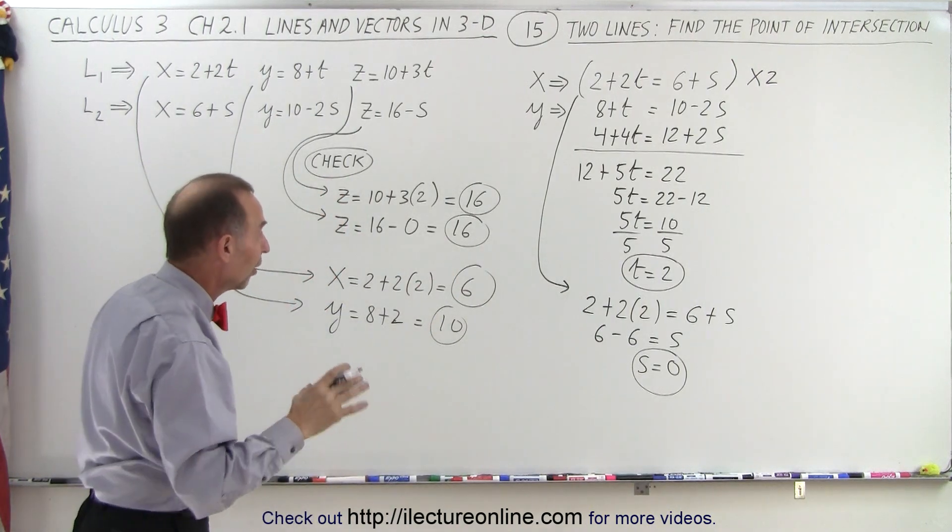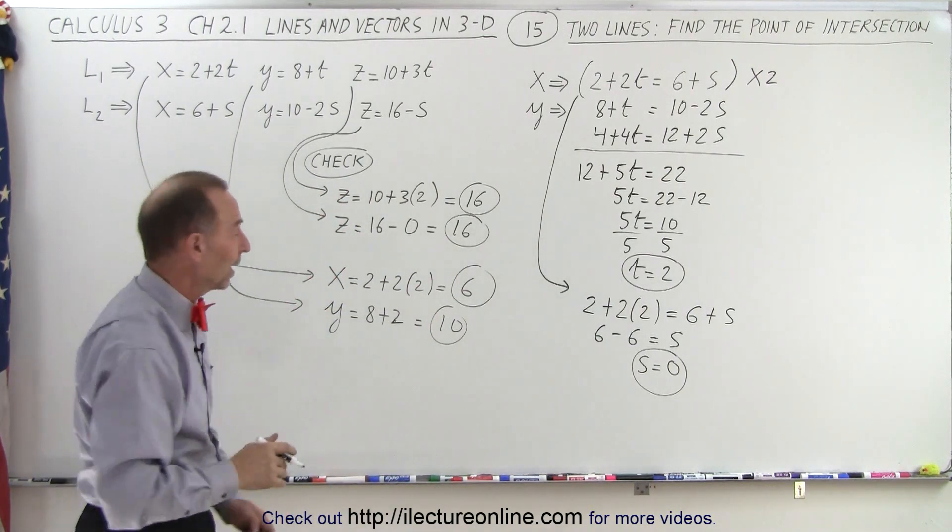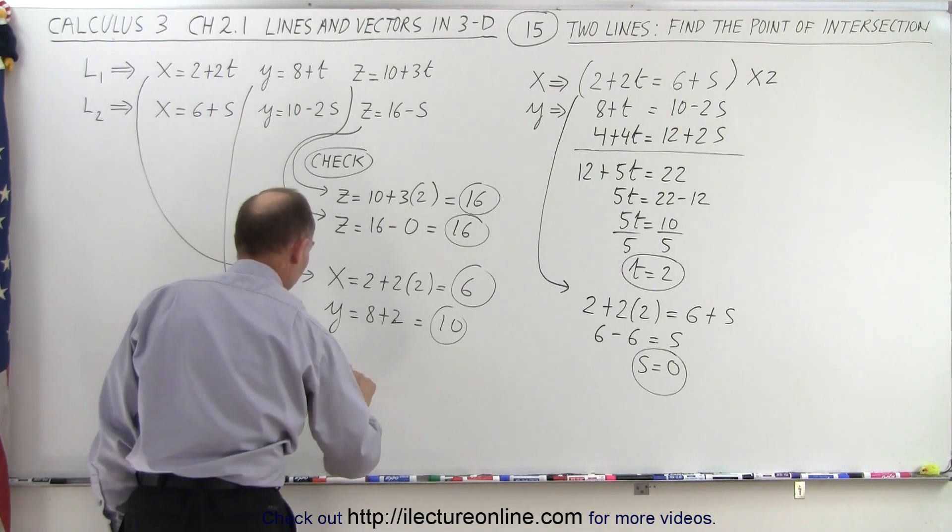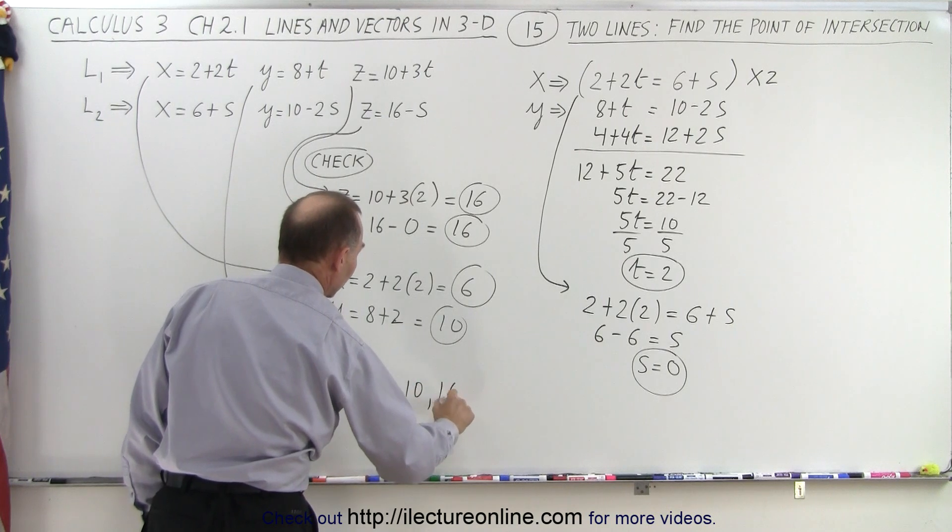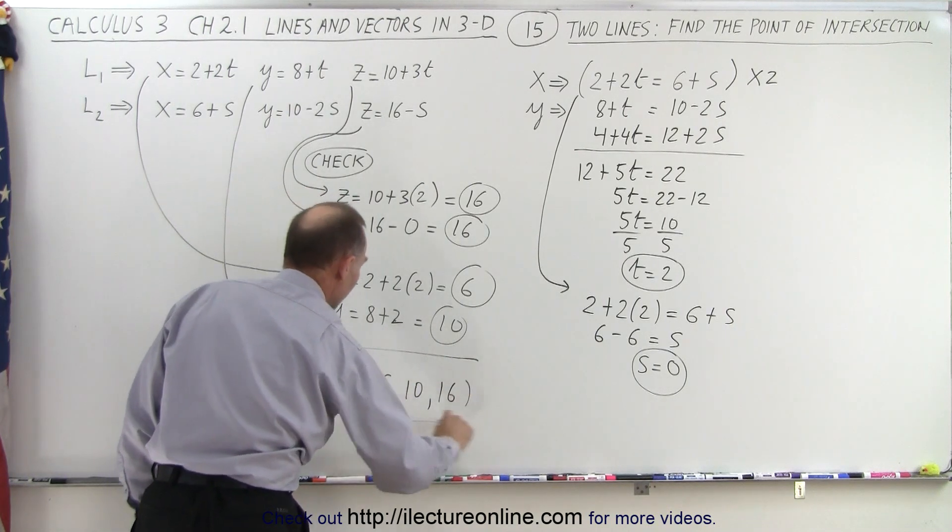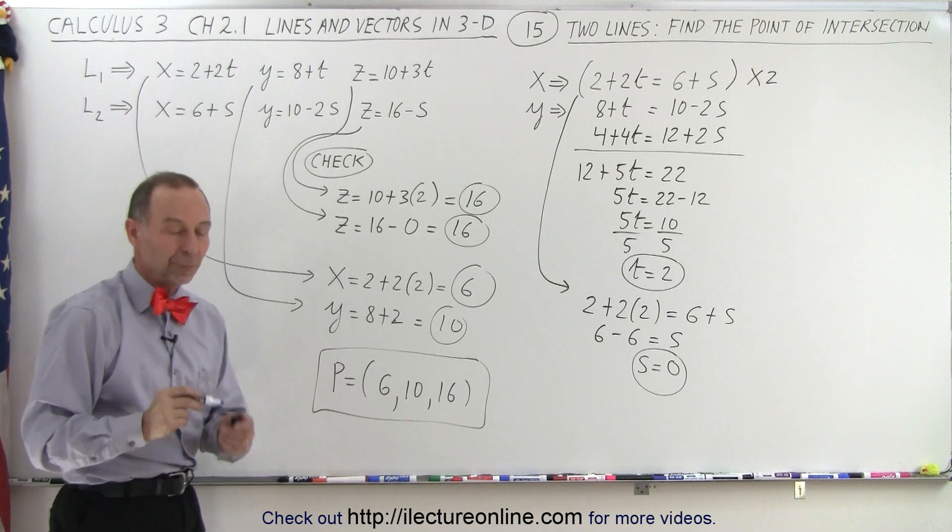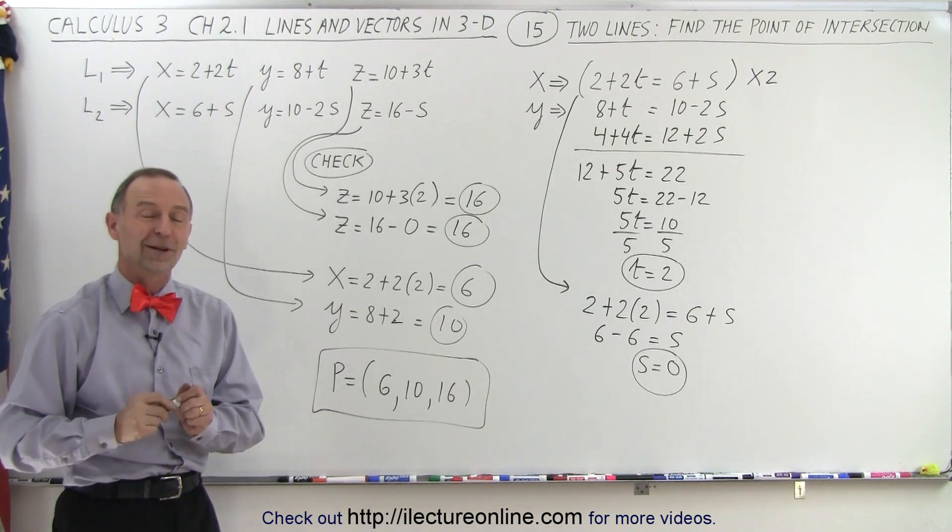Those are the three coordinates of the point where the two lines meet. So they meet at the point where we have x is equal to 6, y is equal to 10, and z is equal to 16. And there we go, that's the point where the two lines cross, and that is how it's done.